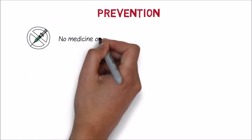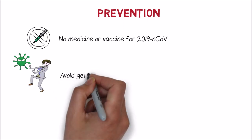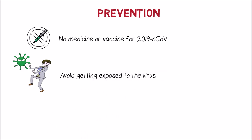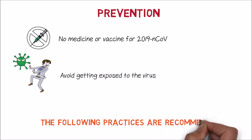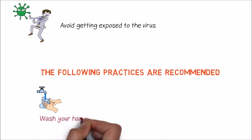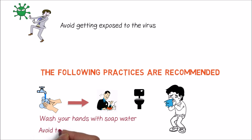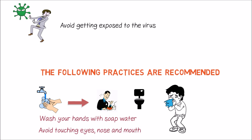Currently, there is no medicine or vaccine to prevent 2019 novel coronavirus infection. The only way to prevent infection is to avoid getting exposed to this virus. The following hygienic practices are recommended: wash your hands with soap and water before eating, after using washrooms, and after blowing your nose. Avoid touching eyes, nose, and mouth with unwashed hands.